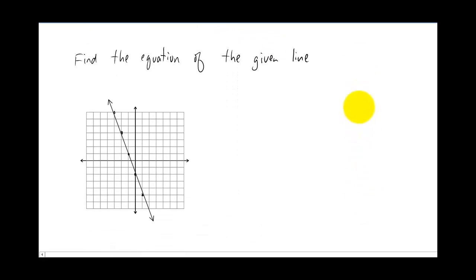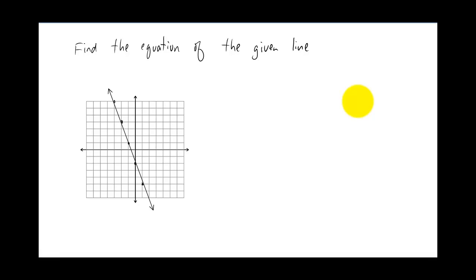Alright, let's keep going. Now, given a line that's already graphed, can we find the equation of that line? Well, what we need is two pieces of information. We need the y-intercept. So in this case, the y-intercept appears to be negative two. And we need a slope.